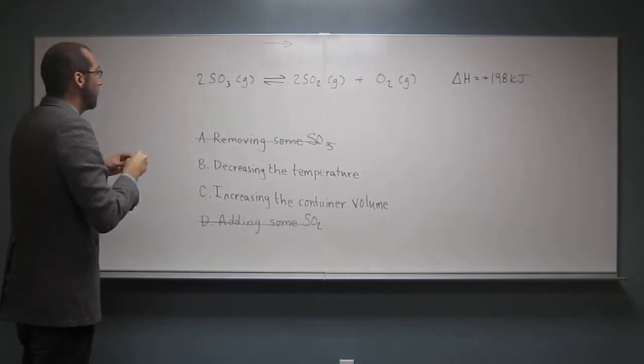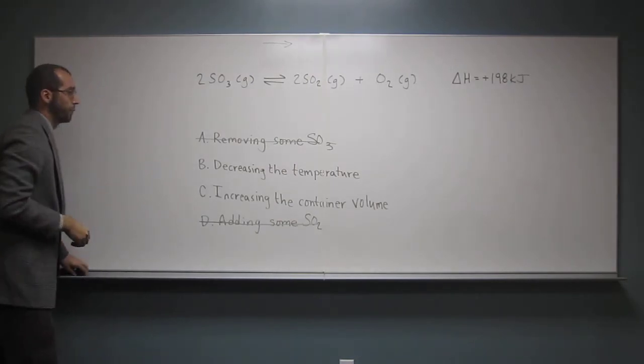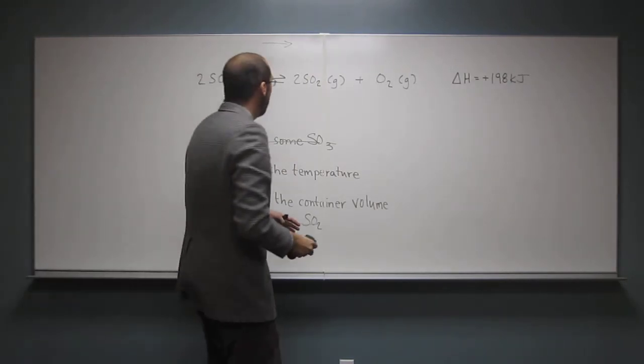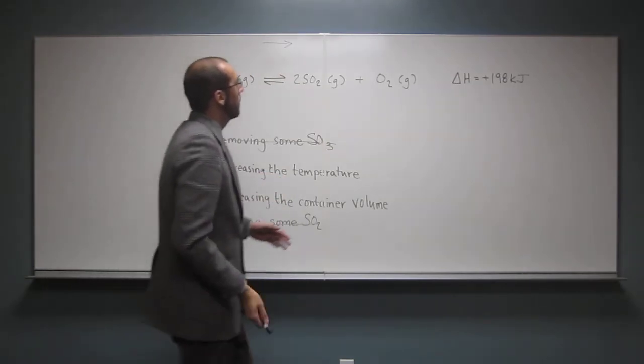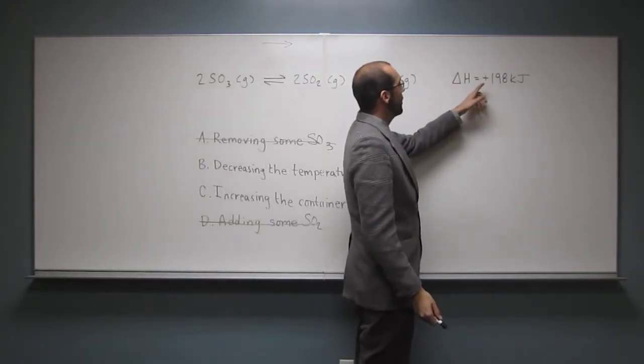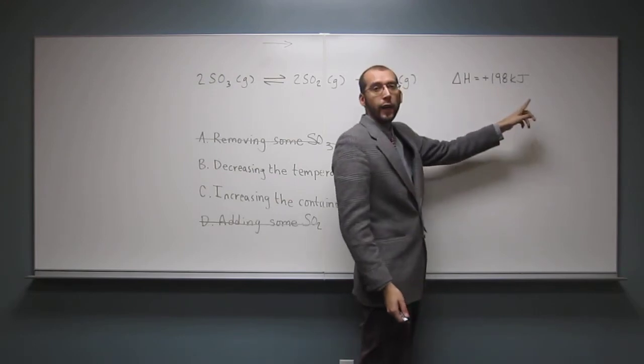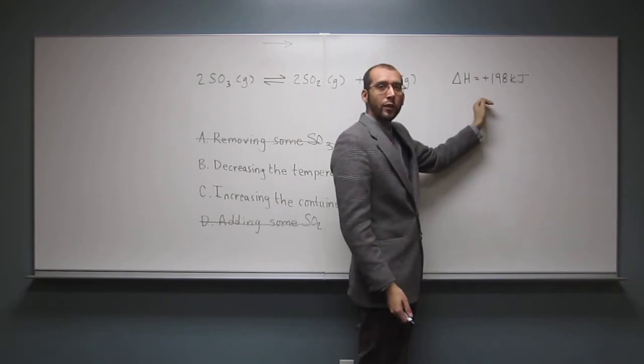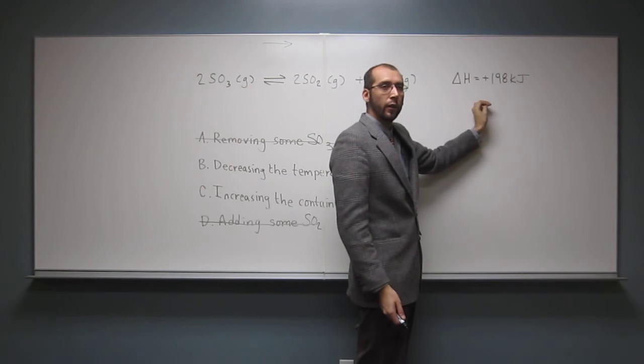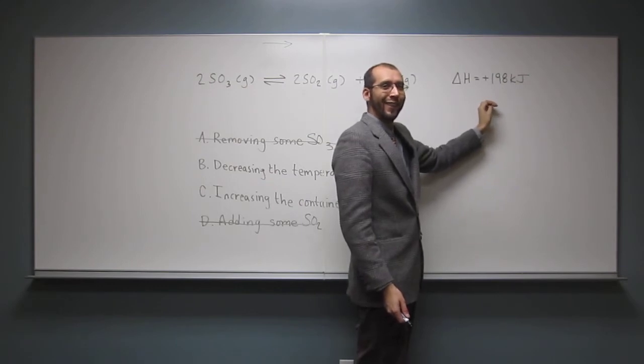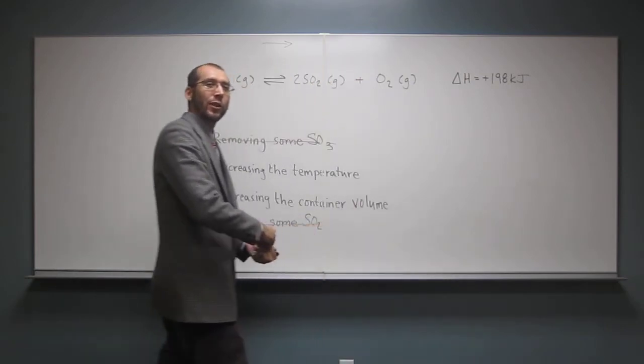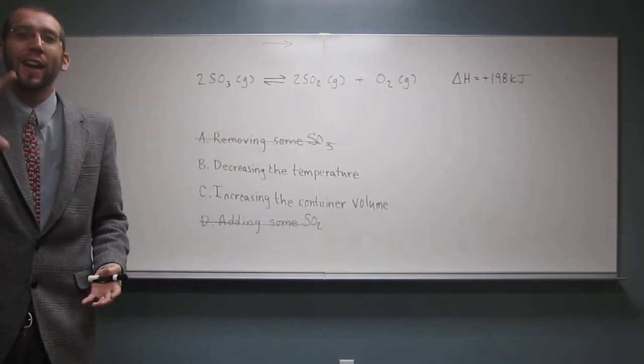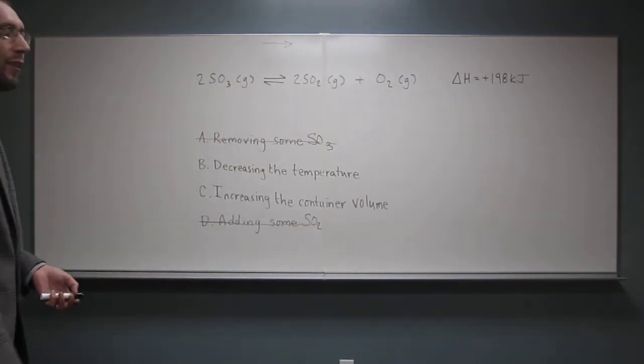So decreasing the temperature. This one might not be so obvious, but remember, when we look over here, it says delta H equals plus 198 kilojoules. What kind of reaction is this? Exo or endothermic? Exo means it's releasing heat. The heat is exiting the reaction.